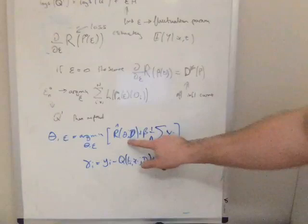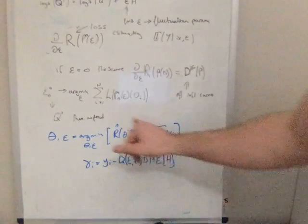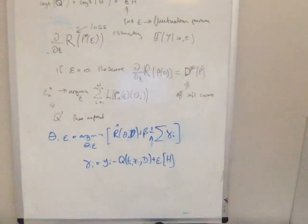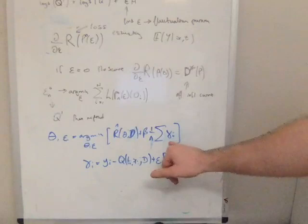R ends up being the loss associated with estimating Y, given the covariates and the treatment. So that's your regular, say, binary cross entropy loss, if you're interested in just predicting the outcome, which is binary. Plus this regularising term, beta times one over n times the sum of this gamma i term here...